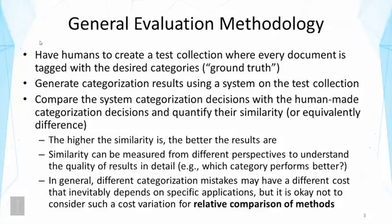Different categorization mistakes have different costs for a specific application — some errors are more serious than others. Ideally we would model such differences, but if you read papers on textual categorization you'll see they generally don't, and instead use a simplified measure. That's because it's often acceptable not to consider cost variation when comparing different methods. We're interested in the relative difference of methods, so it's okay to introduce some bias as long as the bias is not correlated with a particular method. A more effective method should still perform better than a less effective one even though the measure is not perfect.